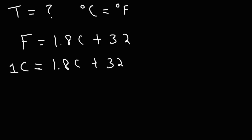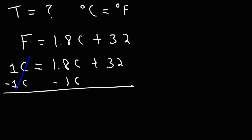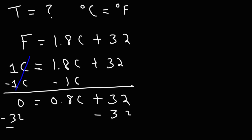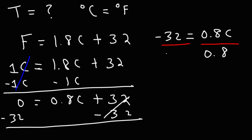C is the same as 1C. Now I'm going to subtract both sides by 1C. These will cancel, giving me 0 on the left. 1.8 minus 1 is 0.8, and then I have plus 32. Next, I'm going to subtract both sides by 32. So I have negative 32 is equal to 0.8 times the Celsius temperature. Now let's divide both sides by 0.8 — that's negative 32 divided by 0.8, which is negative 40.